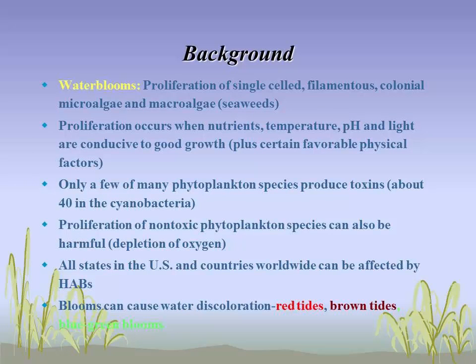I think everyone understands what a water bloom is: a proliferation of single-celled, filamentous, colonial microalgae and even seaweeds. So macrocystis and the things harvested off the coast of California could qualify as an algal bloom or water bloom, even though they're macrophytes. But in the more classic sense, dealing with cyanobacteria and red tides, a proliferation occurs when nutrients, temperature, pH, and light are conducive to good growth, along with favorable physical factors like high retention times and slow flushing.